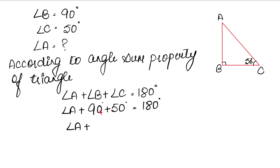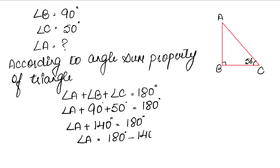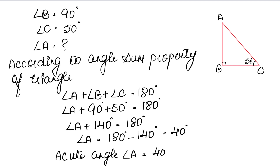Adding the constant terms: 90 plus 50 equals 140 degrees. So angle A plus 140 degrees equals 180 degrees. Therefore angle A equals 180 minus 140, which is 40 degrees. Our acute angle A is 40 degrees. Since 40 is less than 90 degrees, it is confirmed to be an acute angle.